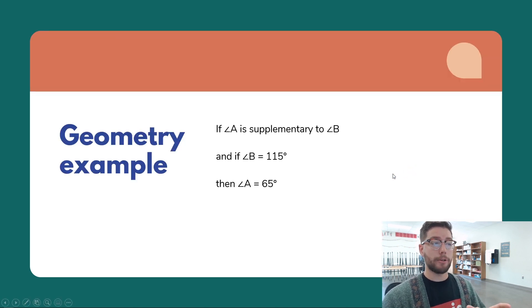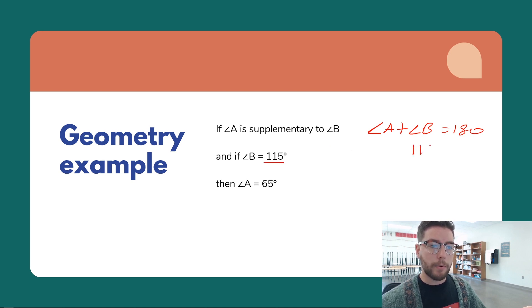All right, here's a geometry example. If angle A is supplementary to angle B and B is 115 degrees, then we have to assume that A is 65. Why? Well, the definition of supplementary is angle A plus angle B equals 180. We already said that B is equal to 115, so we've replaced this with 115.